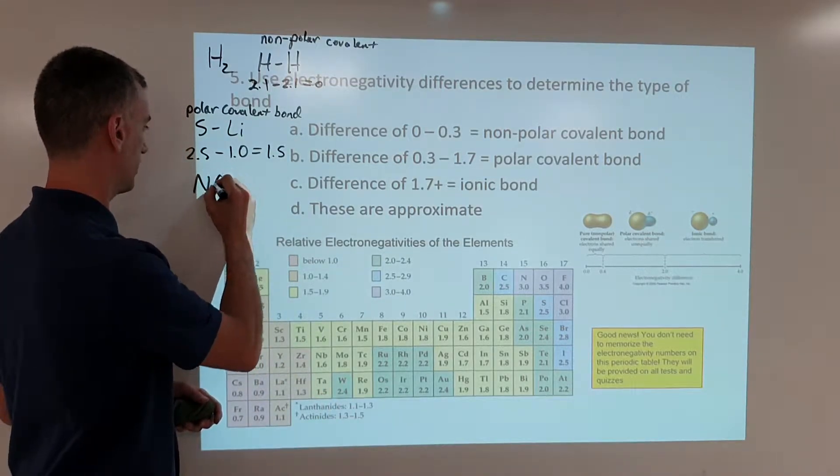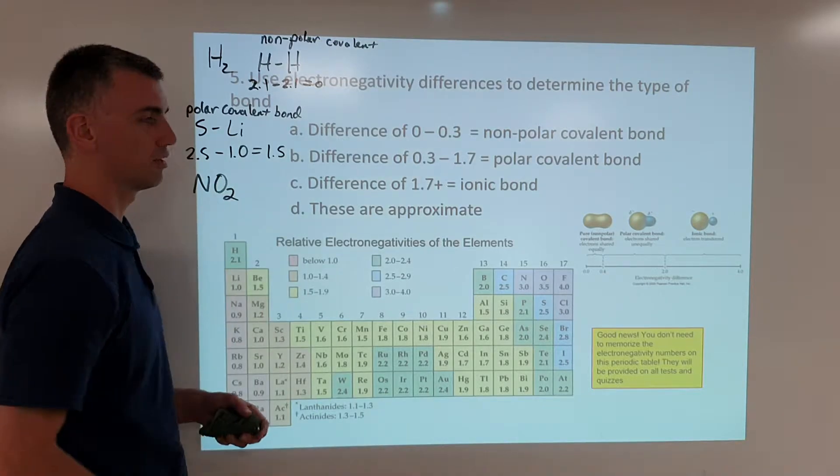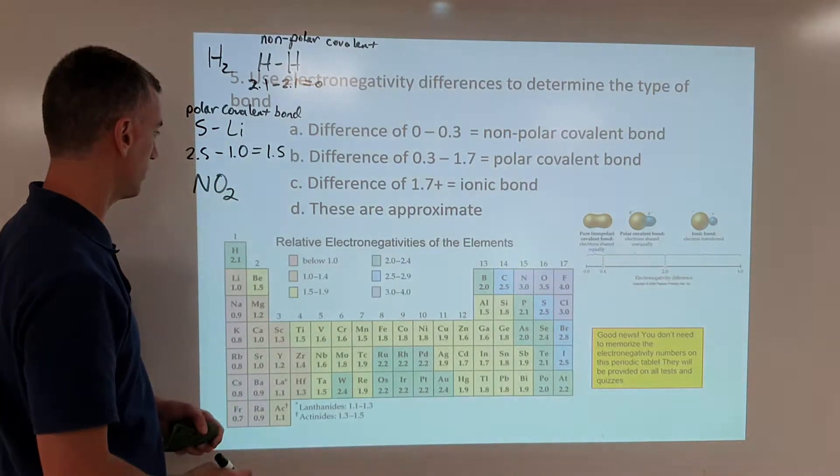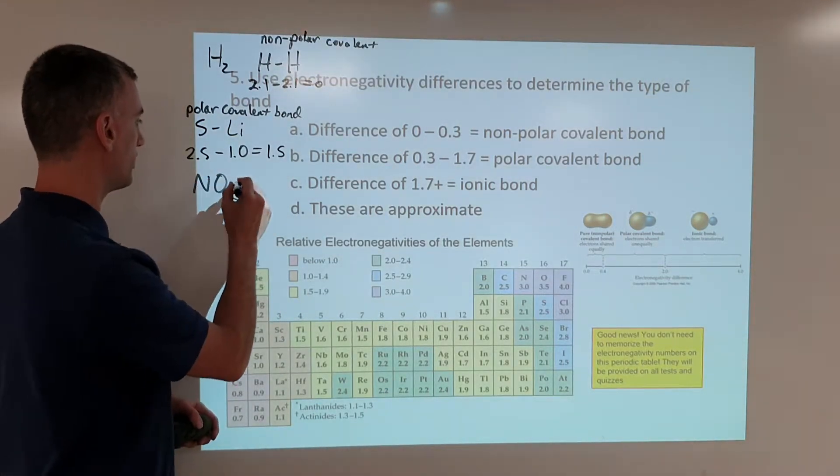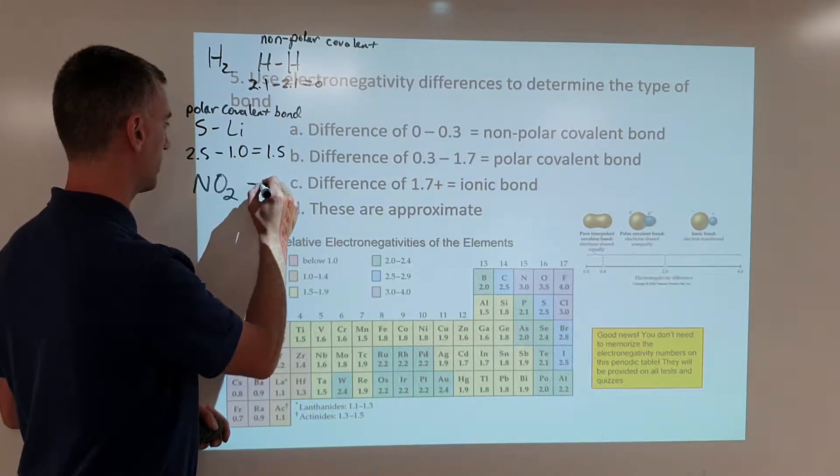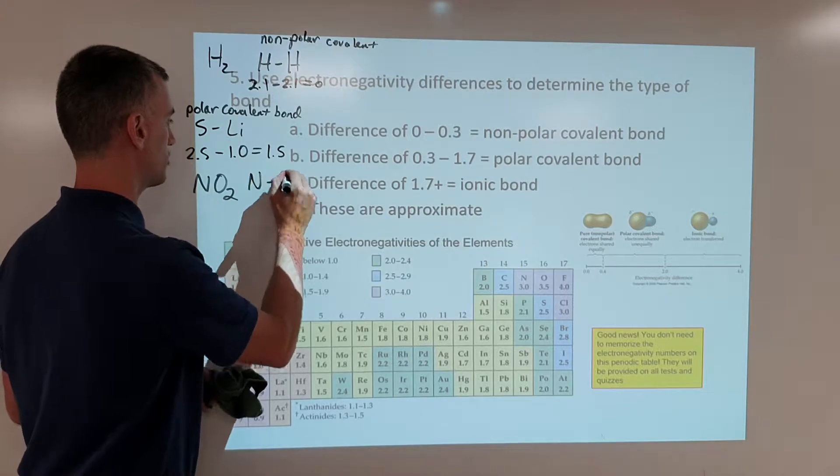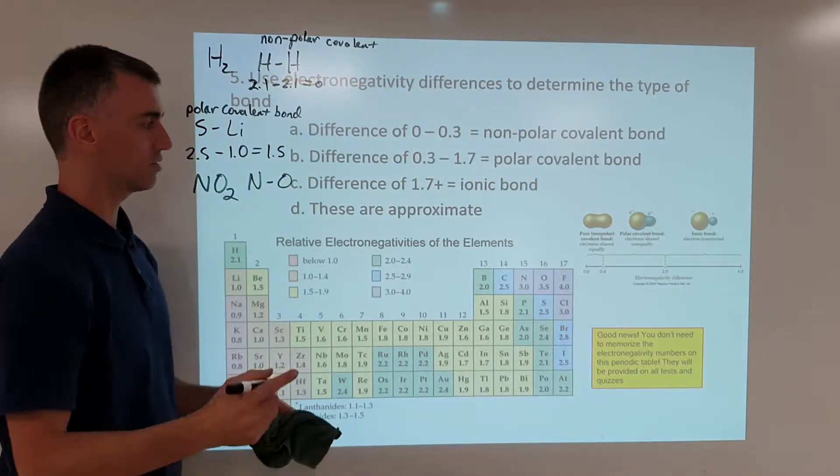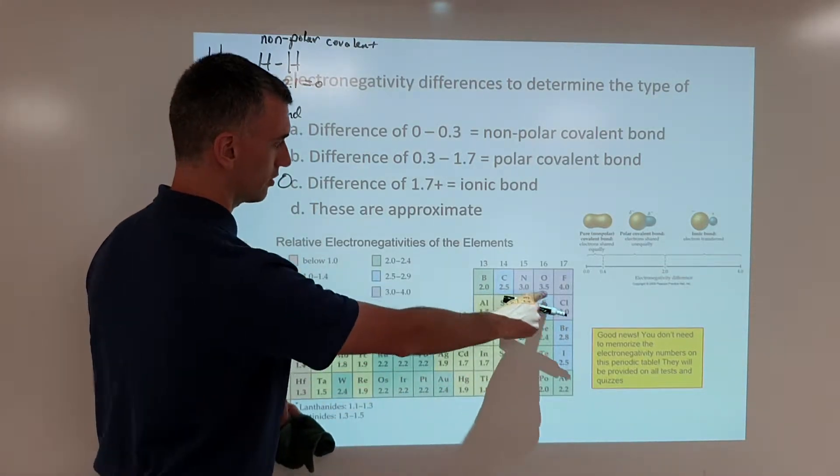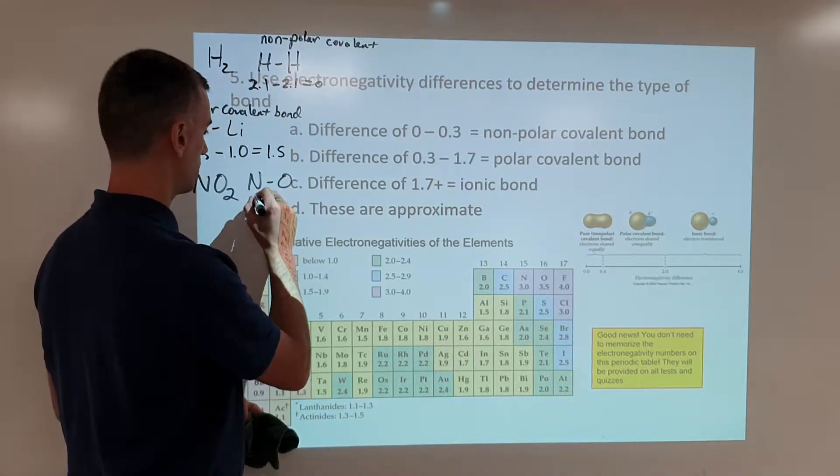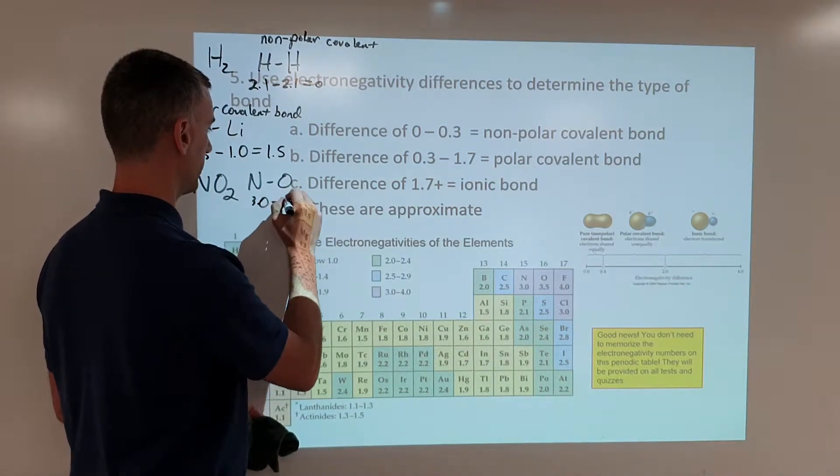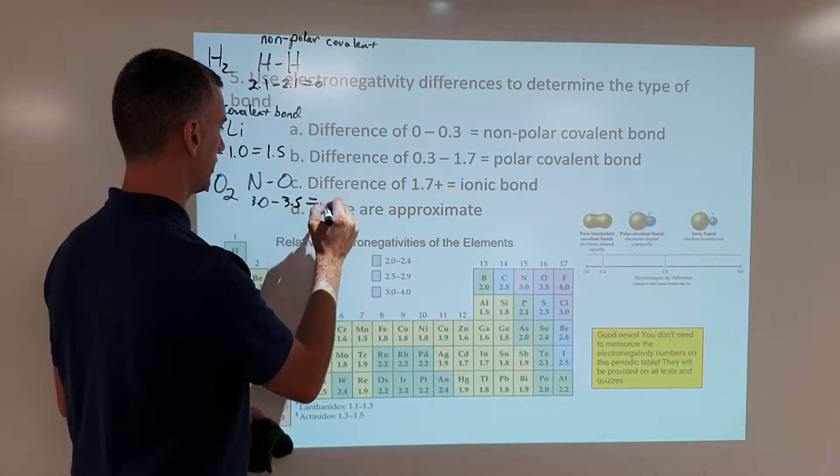Now, suppose you see something like NO2. How do you do with that one? Well, you have to understand that what you're looking at here is a nitrogen-oxygen bond. So you then look at nitrogen, you look at oxygen, it looks like nitrogen is 3.0, oxygen is 3.5.